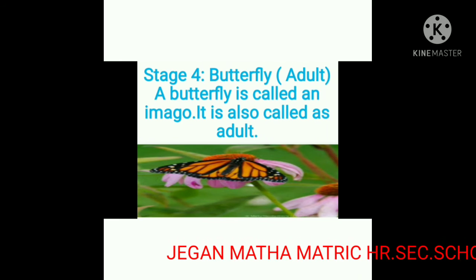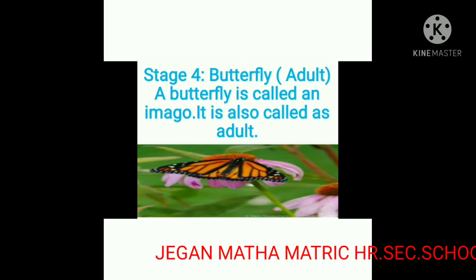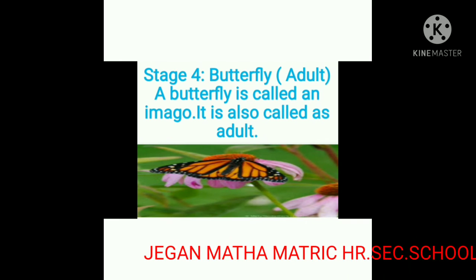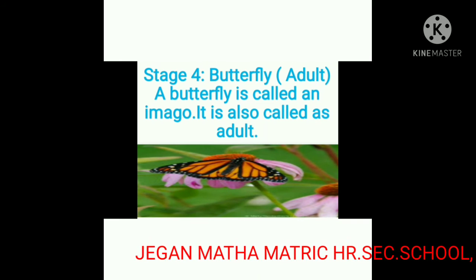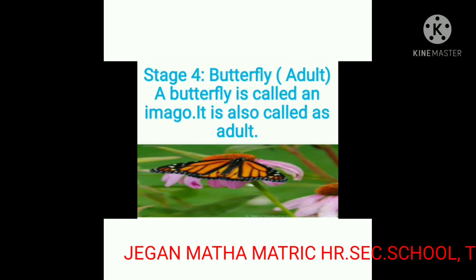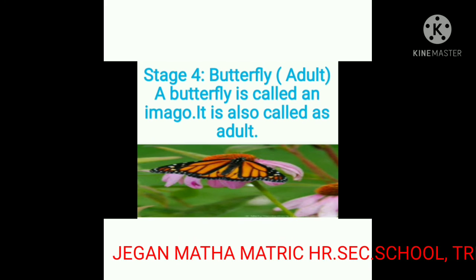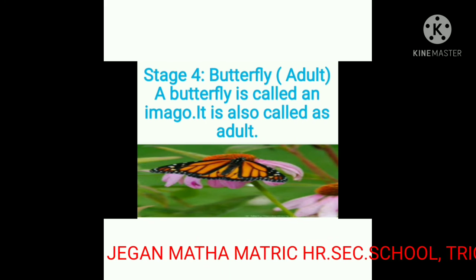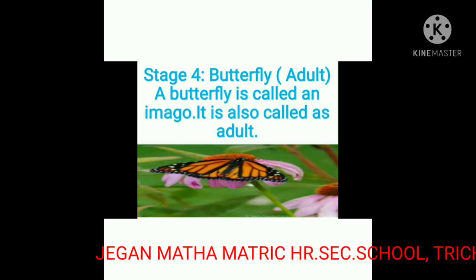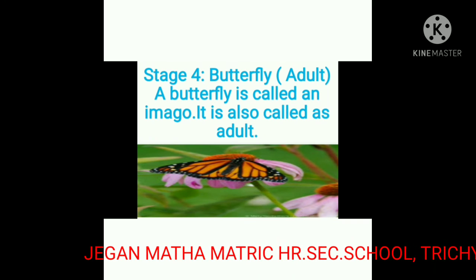In the fourth stage, the pupa opens and a butterfly comes out. A butterfly is sometimes called an imago. It is also called an adult.